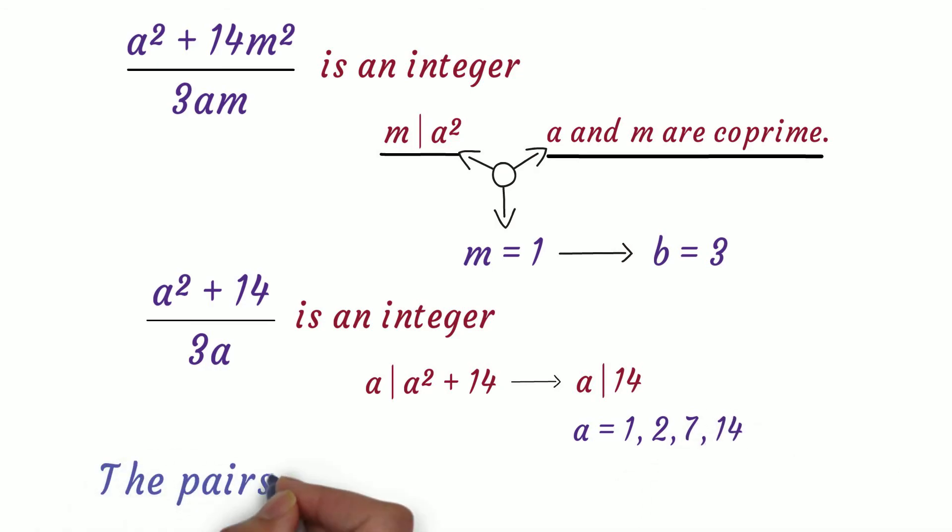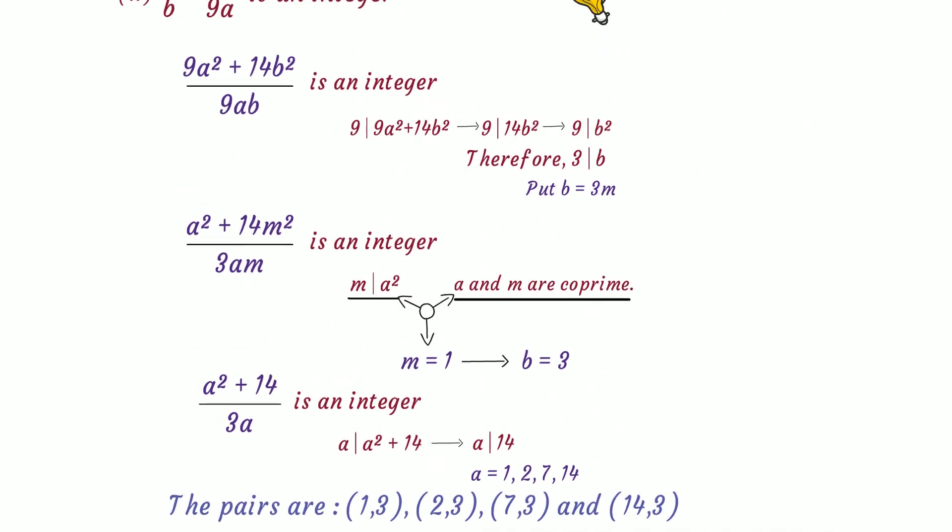Now we have 4 pairs: (1,3), (2,3), (7,3), and (14,3) satisfying all the given conditions.